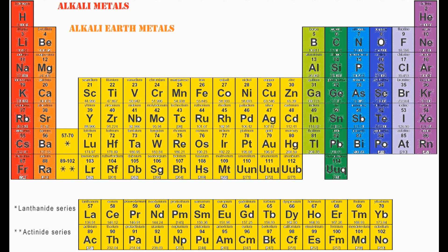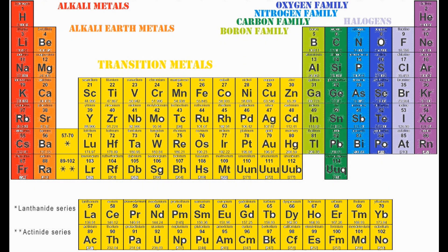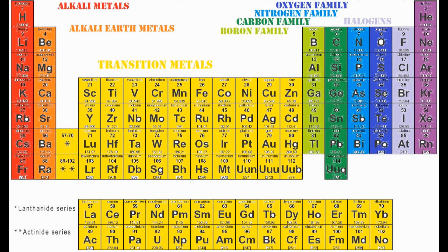So you've got your alkali metals, your alkaline earth metals, your transition metals, the boron family, the carbon family, the nitrogen family, the oxygen family, and the fluorine family — right? Wrong. It's the halogens. That one is going to screw you up, so remember that one. And last but never least, the noble gases.